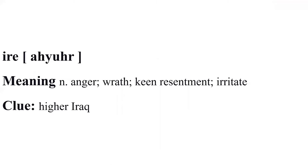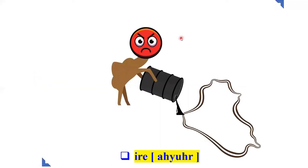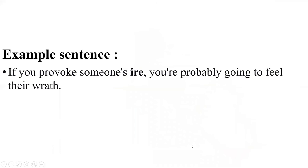Ire – Anger – Wrath – Keen – Resentment – Irritate. Clue – Hire, Iraq. Visualize – An angry camel pours oil from a high place. If you provoke someone's ire, you are probably going to feel their wrath.